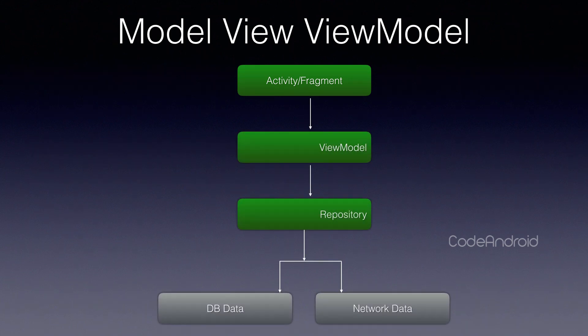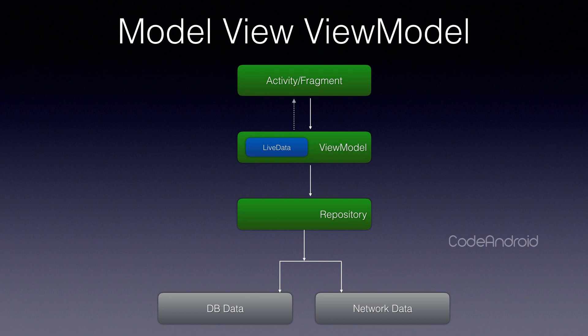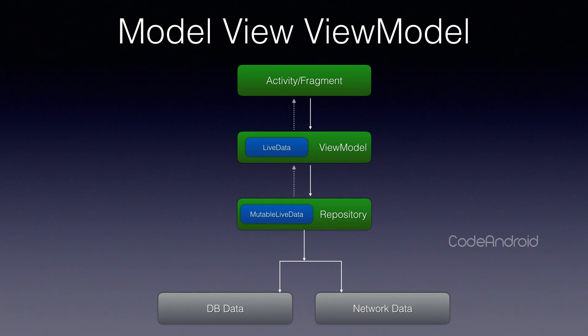Now we'll see how the communication happens between these layers. The activity will access the ViewModel. In the ViewModel, we will create a LiveData object. This LiveData is observed from our View. If any changes happen on the LiveData, it will trigger the observer. But LiveData is a final class, so we can't change the value of the object directly. To do that, we need to create a MutableLiveData on the repository. Then we set the MutableLiveData as a value for the LiveData, so that both will point to the same memory location.